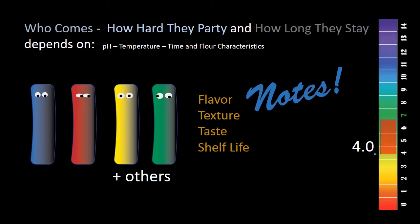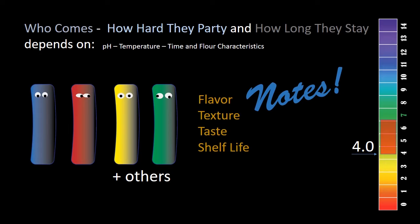Which bacteria come, how hard they party when they're there, and how long they stay depends on pH. Many of these bacteria are not like lactobacillus, which will be there from start to finish. Some will come in at certain pH levels where they like it — where they're happy. When the pH changes beyond their happy point, they're out of there; they stop contributing to the dough system. Temperature plays a big role in the speed at which pH changes, and so temperature is also a very big component. Of course time as well — the amount of time these particular bacteria are in the dough system contributing will often determine the type of flavor you get.